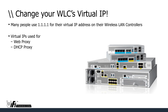So I thought I'd make a quick video and explain this to everybody. First of all, let's remember what we use these 1.1.1.1 IP addresses for in the first place. There are a couple of key functions. It's one of the many types of interfaces we have in our wireless LAN controllers, and since our wireless LAN controller sits between the WLAN and the wired LAN, it's a great place to do things like proxying.